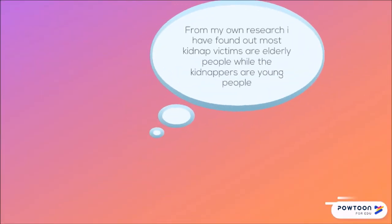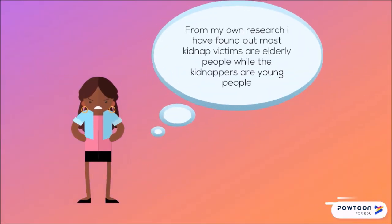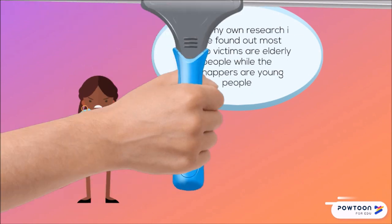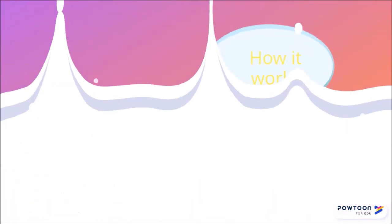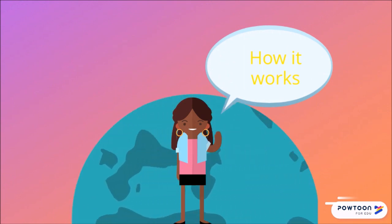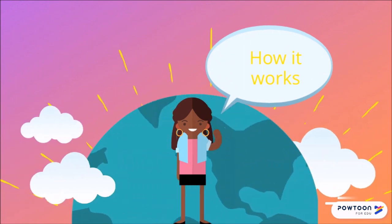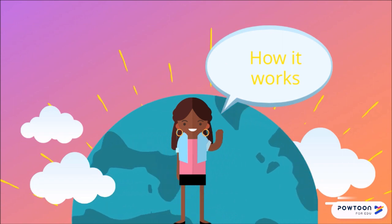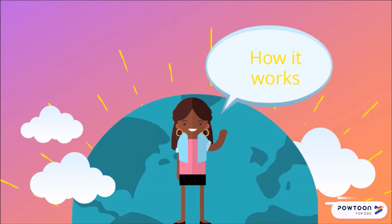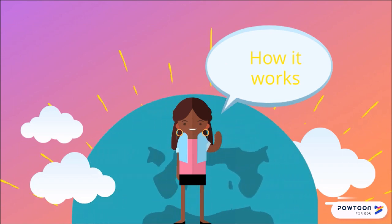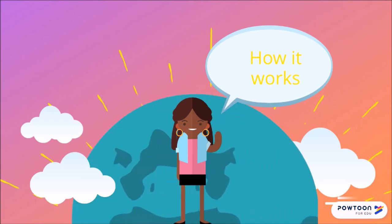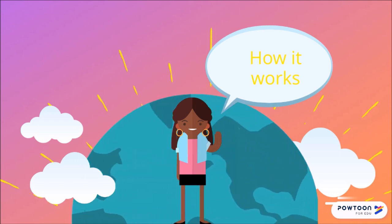From my own research, I have found out that most kidnapped victims are elderly people, while the kidnappers are young people. It is a known fact that as you age, your hearing degenerates. So the device takes advantage of these facts. When the elderly are being attacked, they can turn it on, and as the high frequencies play, it irritates the young kidnappers, giving the elderly enough time to run or to get to safety.